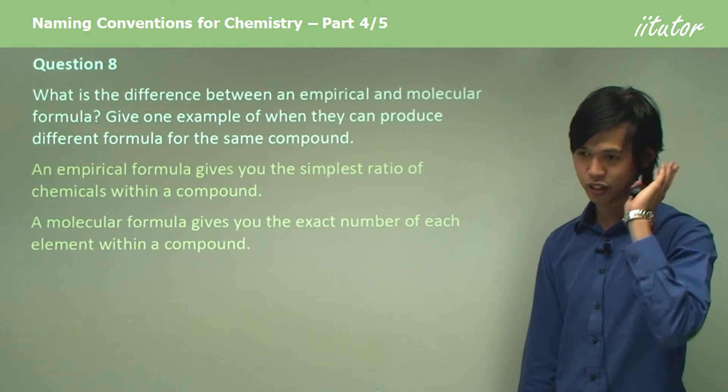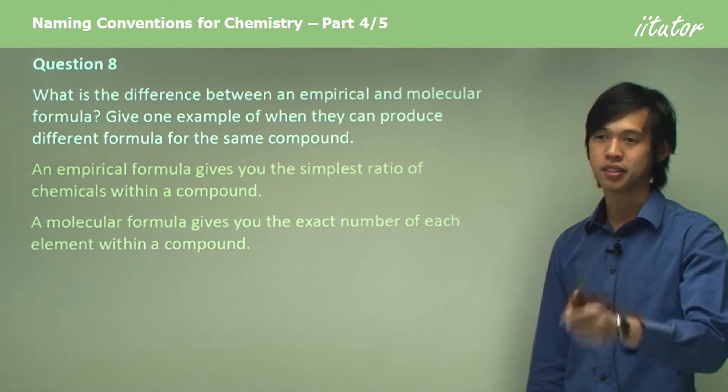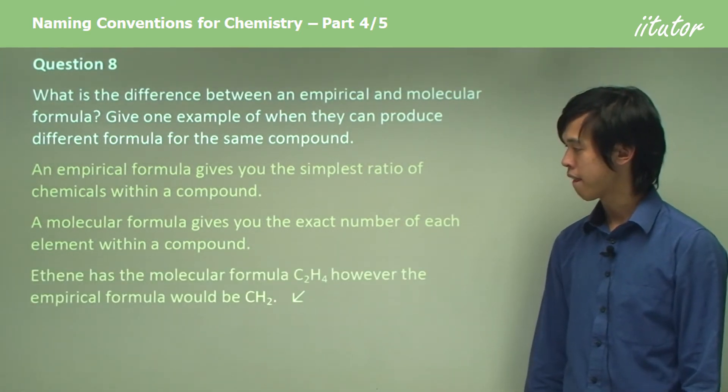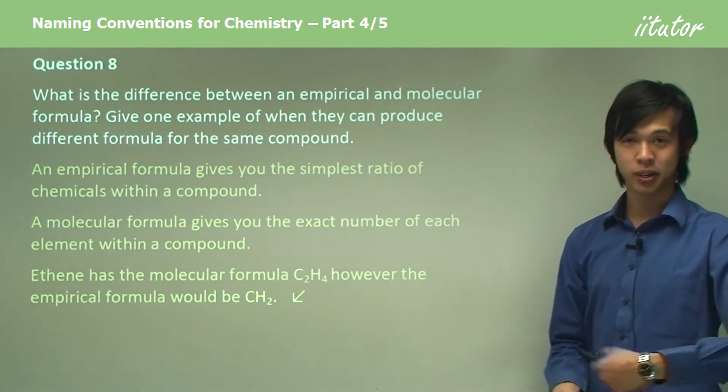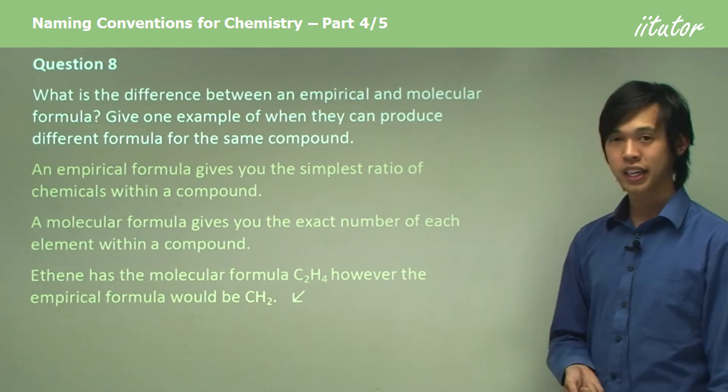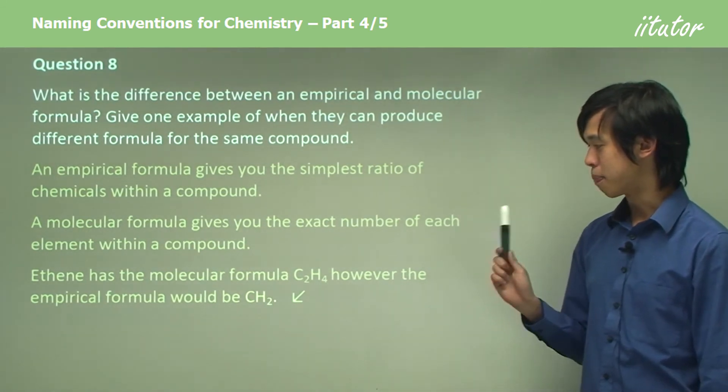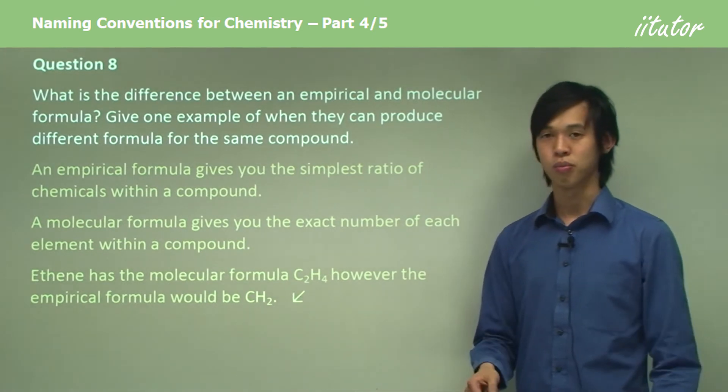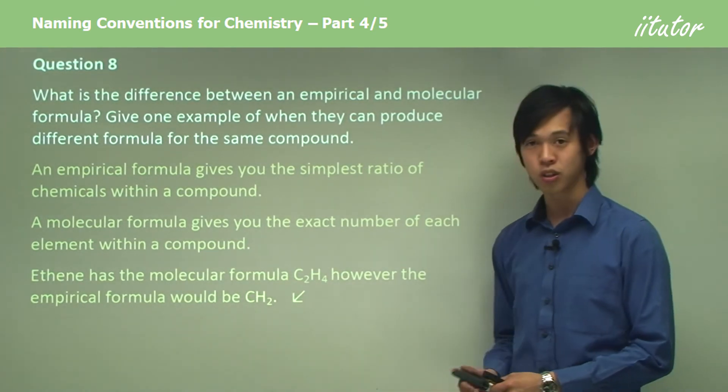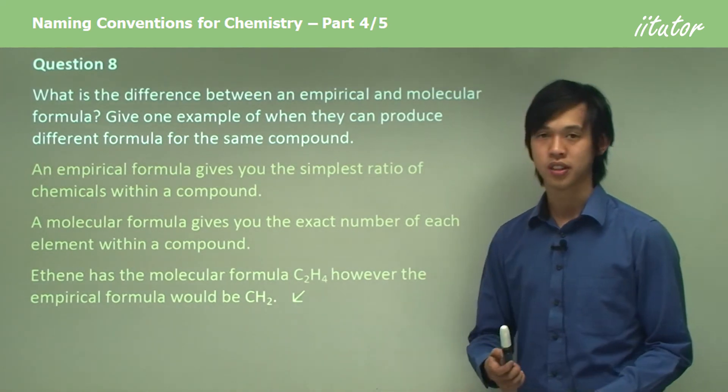A molecular formula gives you the exact number of each element within a compound. So if there's two carbons, it'll say there are two carbons. So ethene has the molecular formula C2H4. I brought that up earlier. However, the empirical formula would simply be CH2 because you can divide each of these by two and get one and two.